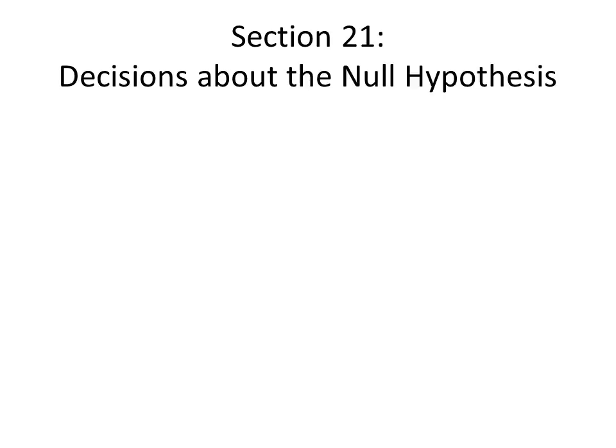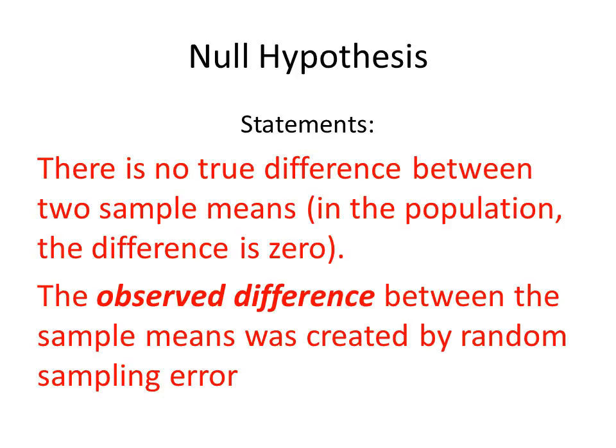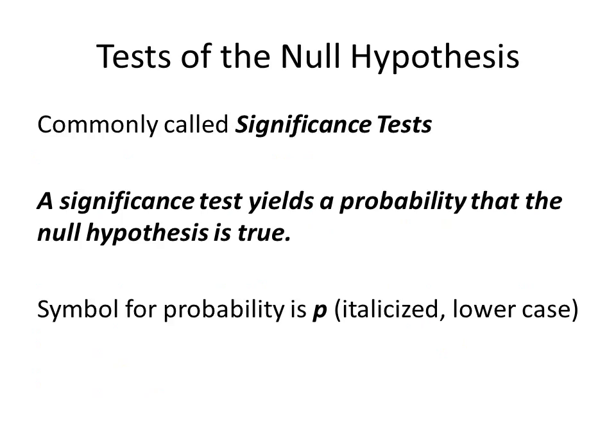This lecture is Section 21: Decisions About the Null Hypothesis and Making Sense of Statistics. Let's go back and review what the null hypothesis says. There are two statements. The first one is there is no true difference between two sample means in the population — the difference is zero. In other words, the observed difference between the sample means was created by random sampling error. The rest of this textbook will be dealing with the test of the null hypothesis, and those are called significance tests.